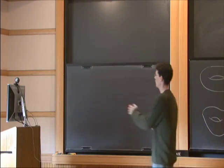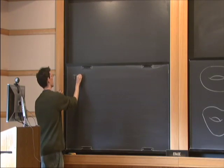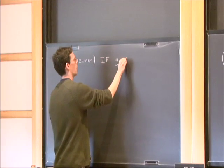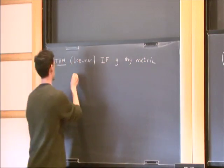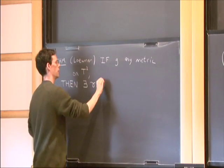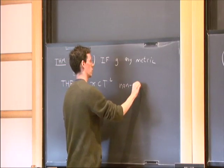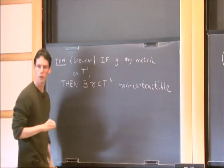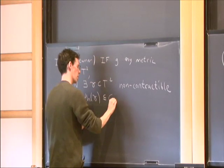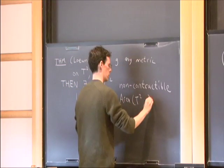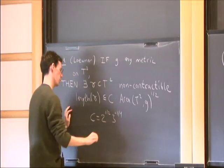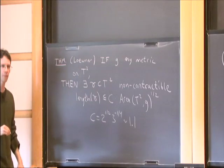Systolic geometry began with a theorem from the late 40s proven by Charles Lovner. He proved that if you take any metric G on a two-dimensional torus, then you can find a curve gamma contained in the torus which is not contractible, and where the length of gamma is bounded by a constant times the area of the torus to the one-half power. Lovner figured out that this constant is the square root of 2 divided by the fourth root of 3, which is approximately 1.1.